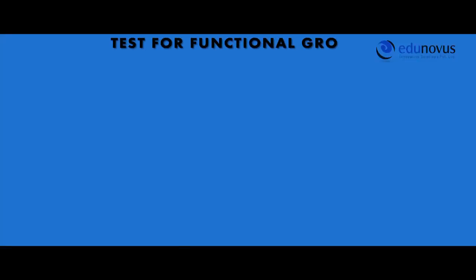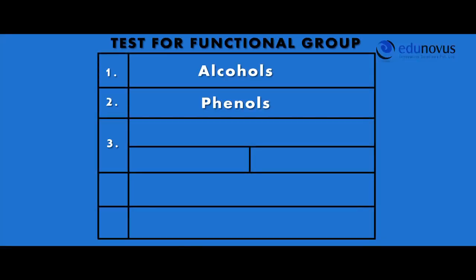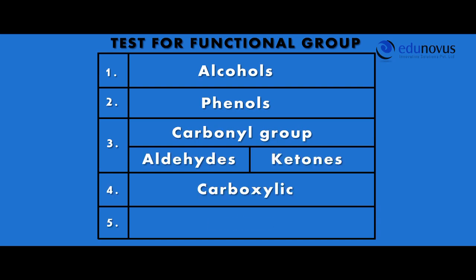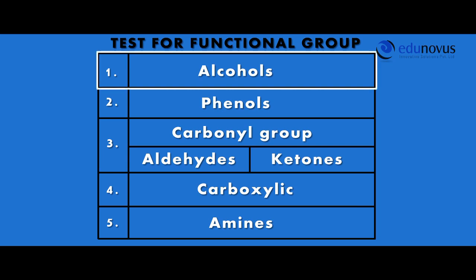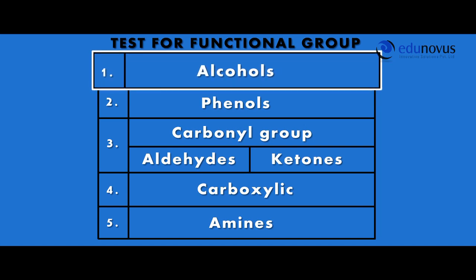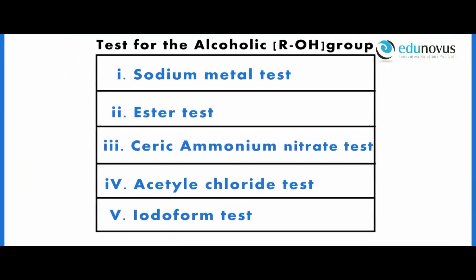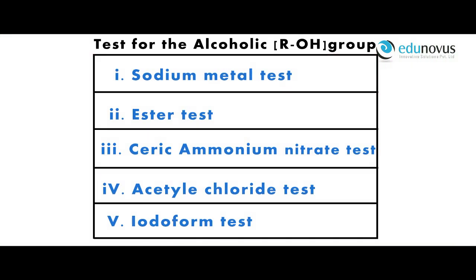Qualitative analysis of organic compounds — the analysis and identification of unknown organic compounds — constitutes a very important aspect of experimental organic chemistry. Here we test for functional groups present in organic compounds. First, let us start with alcohols: compounds in which the hydroxyl group is linked to the aliphatic carbon chain or in the side chain of an organic compound. Here we have five tests to identify the alcoholic group.